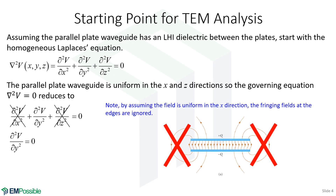We would like to analyze this as a one-dimensional problem as a slab waveguide. So if there is any width W to this, we are ignoring any fringing fields outside. We are going to pretend that all the fields are completely straight from one plate to the other. That is a great approximation in the middle. If we have a wide parallel plate waveguide, it is a very good approximation. If the waveguide is very narrow, what we are about to do is not a good analysis.